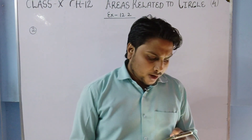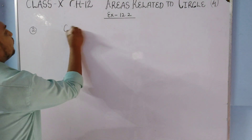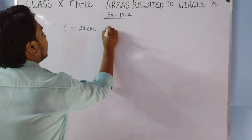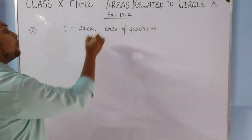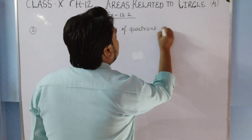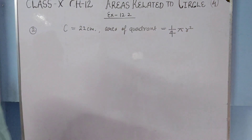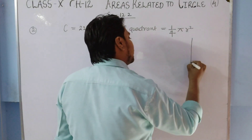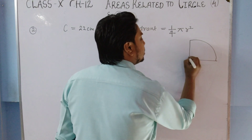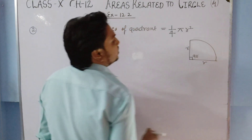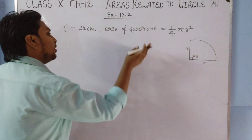The second question asks: find the area of a quadrant of a circle whose circumference is 22 cm. The area of a quadrant is (1/4)πr². A quadrant is a sector with a 90-degree angle, which is one-fourth part of the circle, so the formula comes from theta/360 = 90/360 = 1/4.